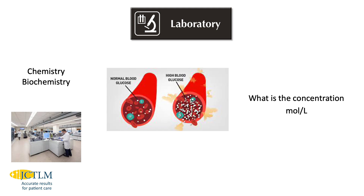Chemistry, or biochemistry, examines specific biomolecules to determine the concentration that is present. The illustration shows little white dots on the left indicating normal blood glucose circulating in the blood. Patients who have elevated blood glucose, illustrated by the larger number of white dots on the right, have a disease called diabetes. Many other types of biomarkers are measured quantitatively in chemistry laboratories to help make diagnoses or monitor treatment of diseases.